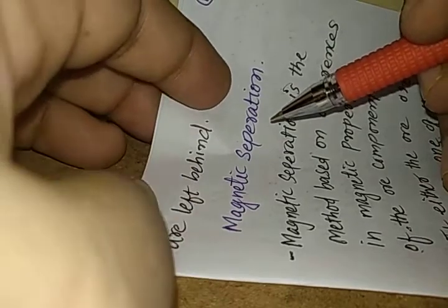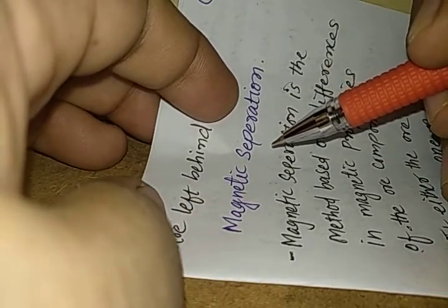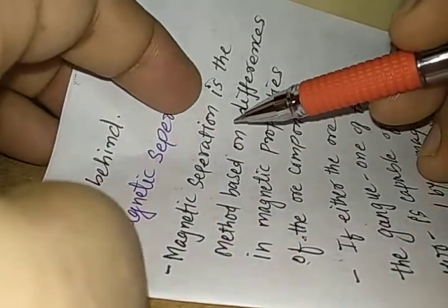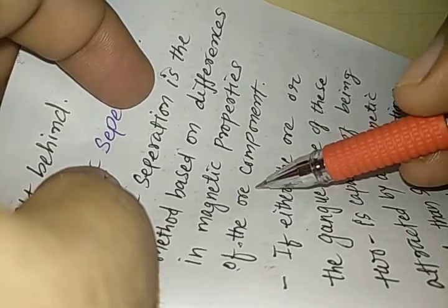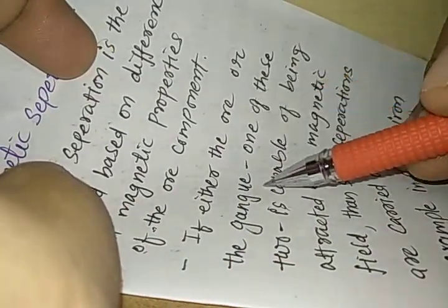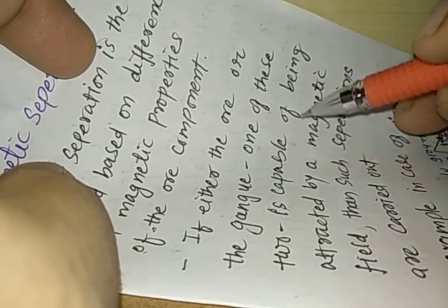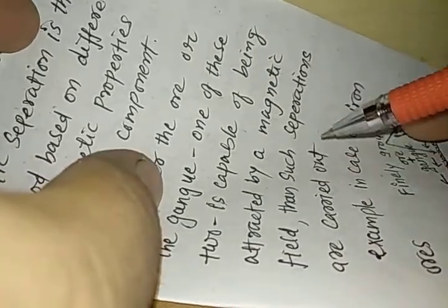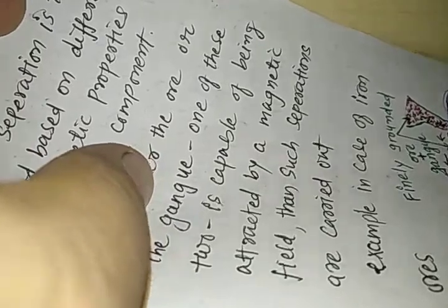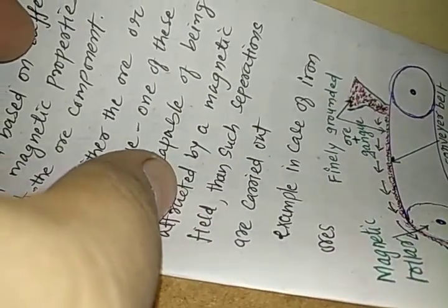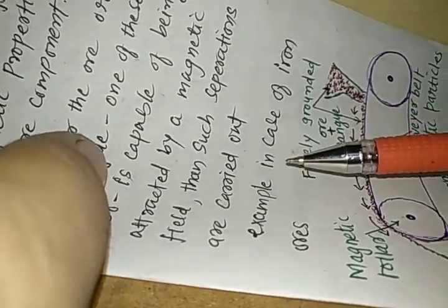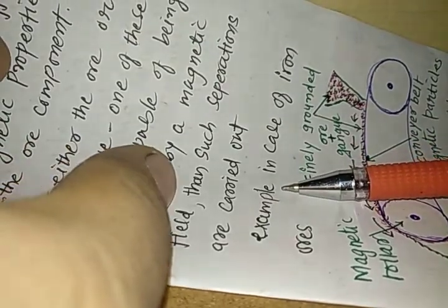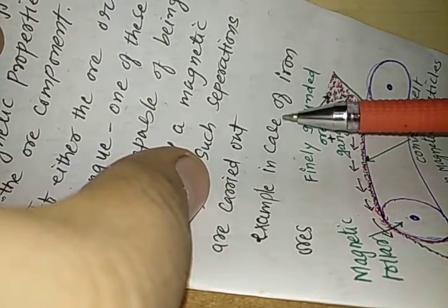The second method for the enrichment of ore is known as magnetic separation. Magnetic separation is a method based on the difference in magnetic properties of the ore components. If either the ore or the gangue is capable of being attracted by a magnetic field, such separation can be carried out. At least one of them — either the ore or the gangue — must be attracted by magnets, but both should not be attracted.